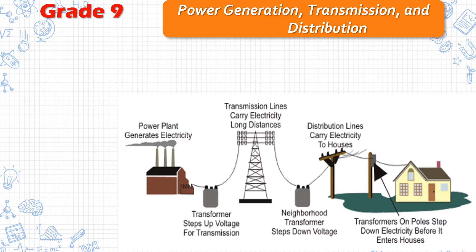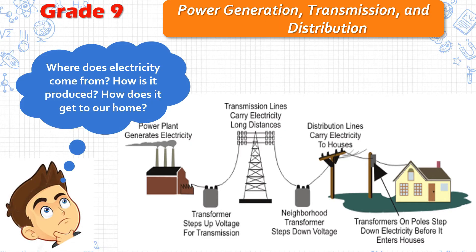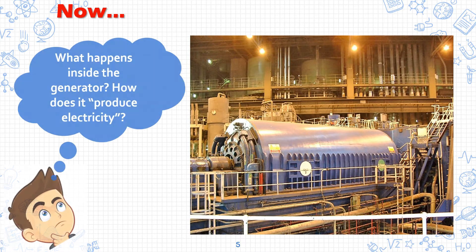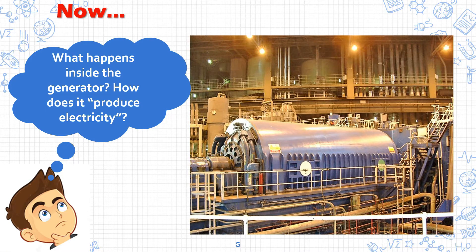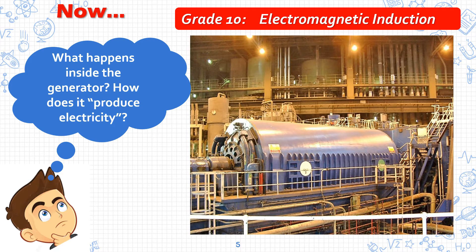When you were in grade 9, your topics revolved around power generation, transmission, and distribution. You were asked where electricity comes from, how it is produced, and how it gets to our homes. Now, for grade 10, your topic revolves on electromagnetic induction. You can answer the question as to what happens inside the generator, and hopefully answer how it produces electricity by the end of the video.